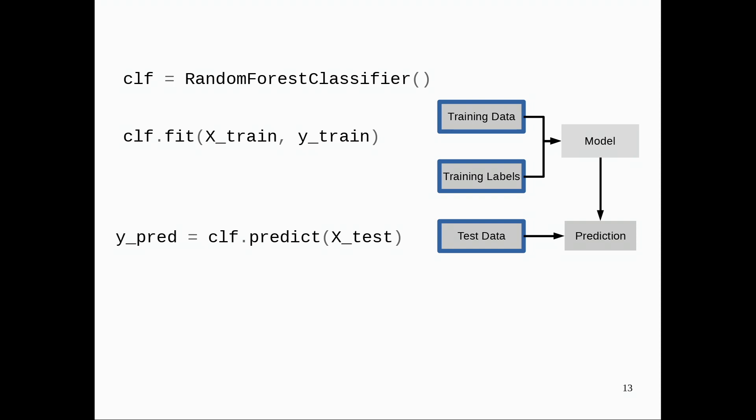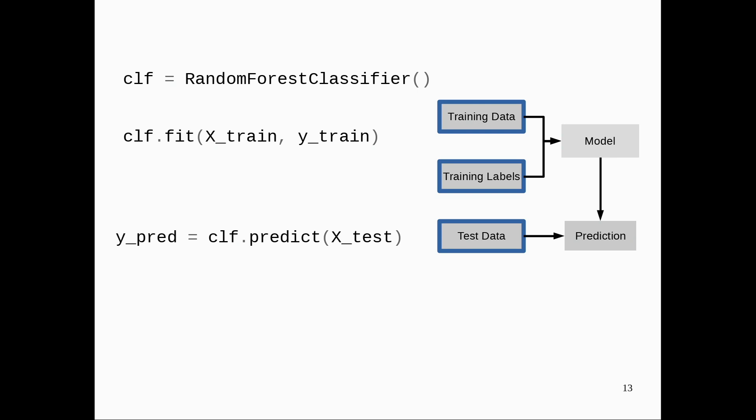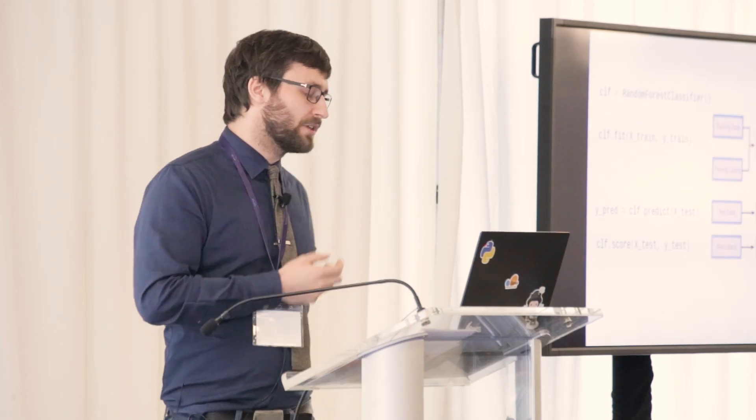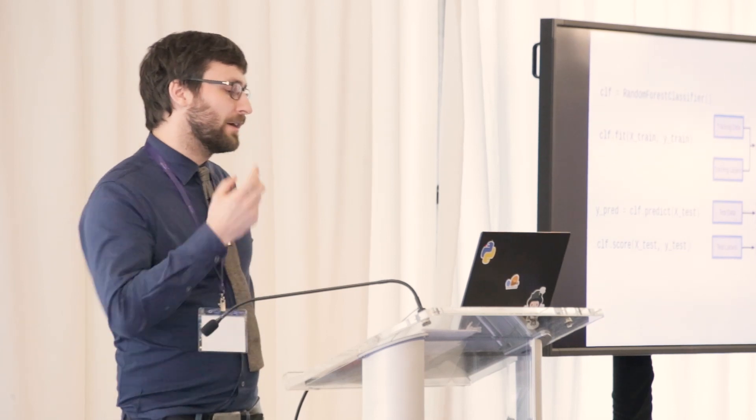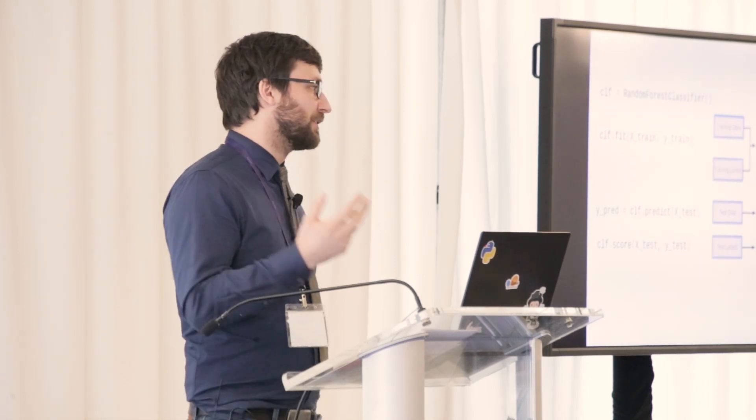If you want to apply this to new data, there's clf.predict, which you input any new data that you have, and it will return the predictions according to the model. There's also a score function, which is basically just a helper function that does both the prediction and then evaluates against some known ground truths. So clf.score makes predictions on x_test according to the model, and then compares it to y_test. And then it reports accuracy.